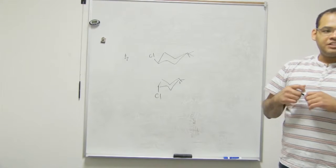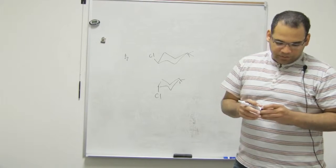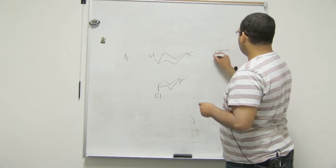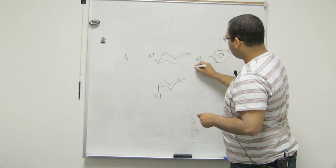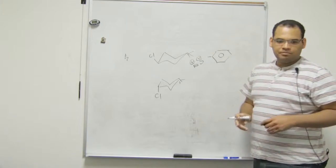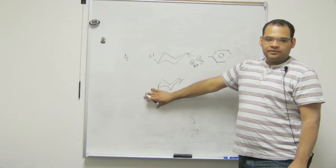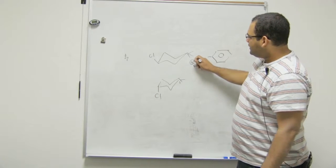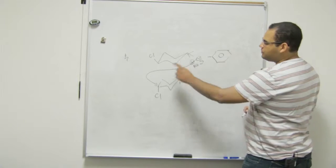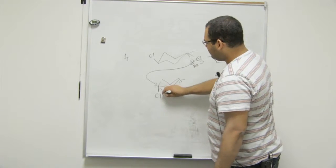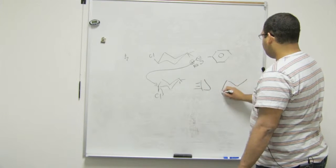We're doing inversion of configuration because we're dealing with SN2 chemistry. So she gave us this guy as our base, as our nucleophile. If this guy here is down and you do the attack, the attack will happen from the top, right? If the attack happens from the top, we kick out the halide.